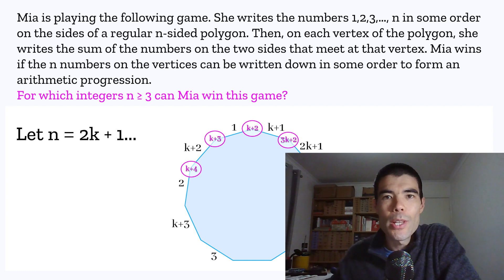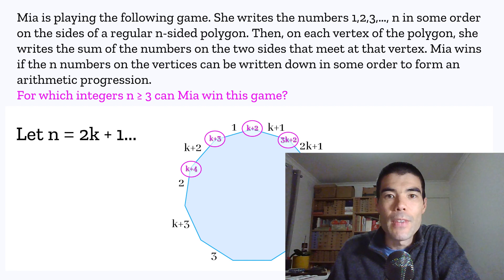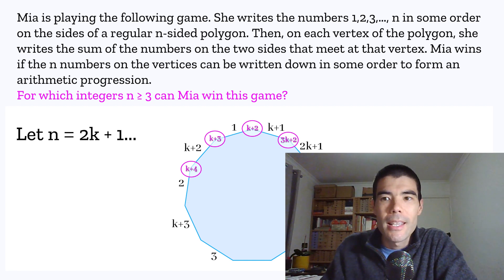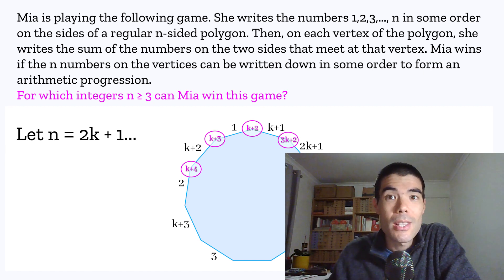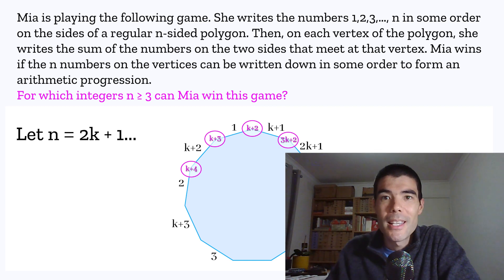So there you are. I hope you enjoyed that problem. To me, it's nice because it's not an easy problem, but it's easy to get started investigating what happens when n equals 3, 4, 5. Notice a pattern, make a conjecture, and then try to prove it. So if you have any questions, feel free to leave a comment. Subscribe if you want to see more videos like this on nice math problems. And see you next time.